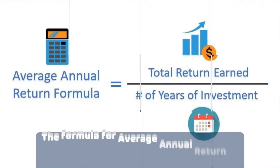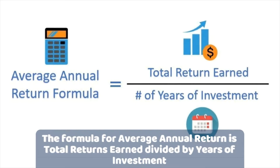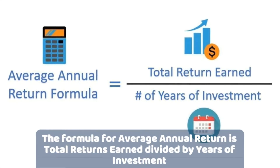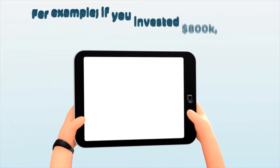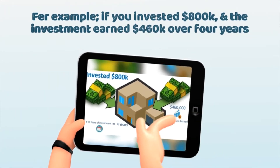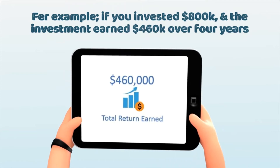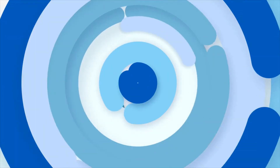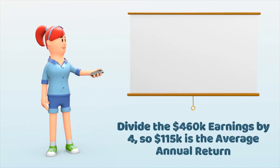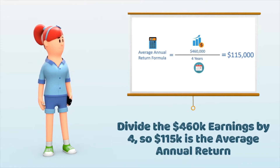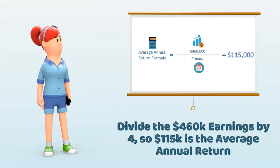The formula is: average annual return equals total returns earned over years of investment. For example, let's say you invested $800,000 and the investment earned $460,000 over 4 years. Divide the earnings by the 4 years you held the investment — $115,000 is the average annual return.